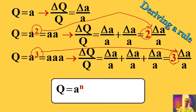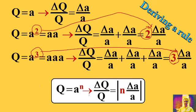q is equal to a to the power of n, where n is any positive or negative exponent. And so delta q over q, the uncertainty for q, is equal to the absolute value of n times delta a over a. Delta a over a is the fractional uncertainty for a, and n is the exponent.